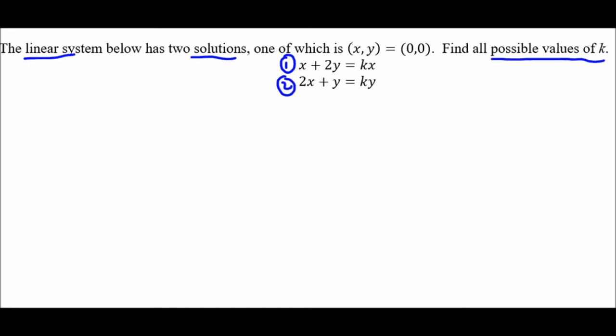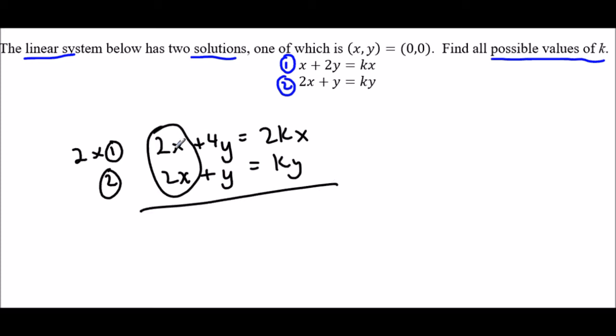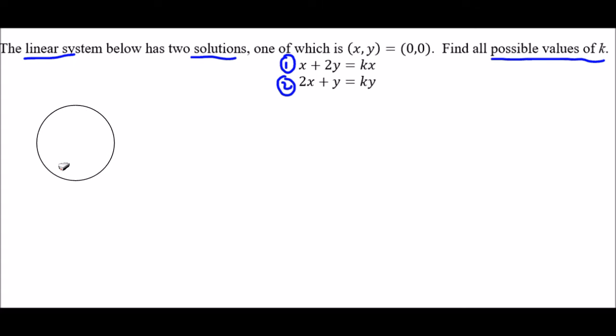So if I try to solve by elimination, I'm going to do two times the first equation, because I'm going to try to eliminate my x's. So 2x plus 4y equals 2kx. And then the second equation, 2x plus y stays the way it is. So if I subtract, I have eliminated the x, but I haven't, because there's still an x over here that won't get eliminated. So I can't eliminate x this way. And similarly, if I tried to eliminate y, I would have the same problem. So elimination isn't really going to work. And therefore, we're going to use substitution.